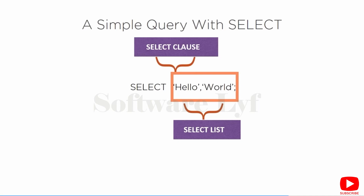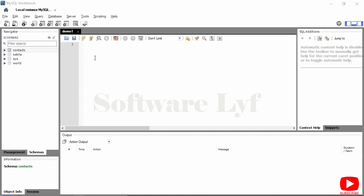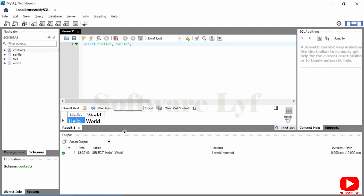It is actually very useful to be able to return constant values in some cases — if values you need in an output aren't actually in the data you are querying, you can interject those items. The most basic SELECT statement you can execute doesn't actually involve going against any data at all. I'm in SQL Workbench, and I have created my contacts database. I'm in an open new SQL tab for executing queries. I'm going to type SELECT 'hello', 'world' and hit the execute button. Right below the SQL is the results grid, and the result is 'hello' and 'world'.